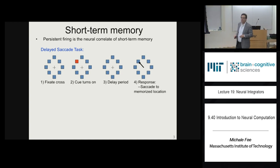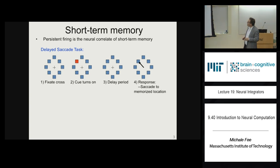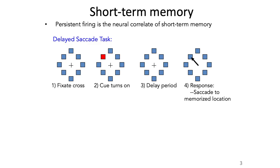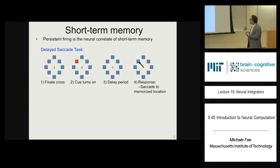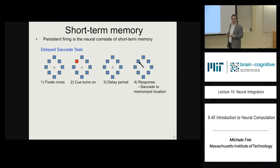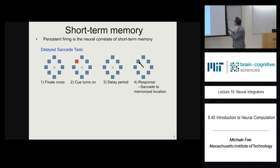Let me show you a typical short-term memory task used to study neural activity in the brain. This task has been studied in non-human primates. The monkey sits in a chair, stares at the screen. There is a set of spots on the screen and a fixation point in the middle. One of those cues turns on — one spot changes color. The monkey has to maintain fixation. The cue turns off, and now the animal has to remember which cue was on. After a delay of 3 to 10 seconds, the fixation cue goes away, telling the animal to look at the cued location.